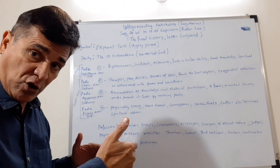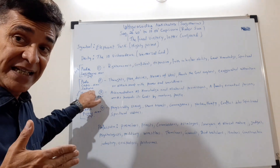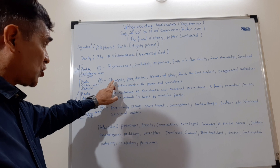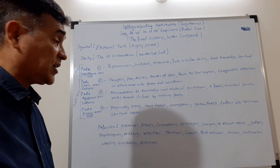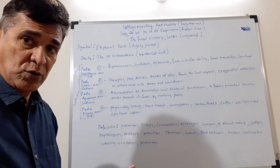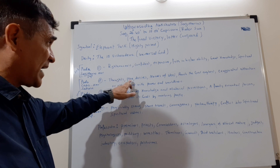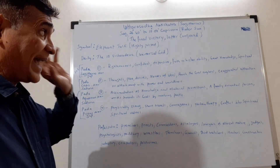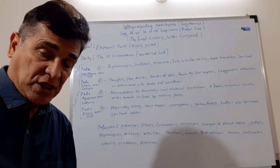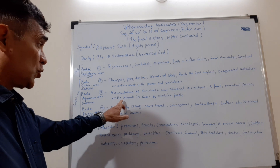The second pada falls into Capricorn — the Navamsha is again Capricorn and Saturn (Shanideva) is the ruler. You have a nerve of steel to reach the goal anyhow. You will have a lot of thoughts, planning, and desires, and you will reach the goal. There is an exaggerated attachment with power and worldliness — that passion drives you to work towards the goal.